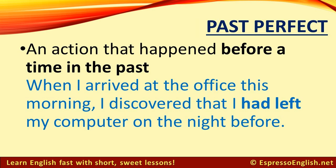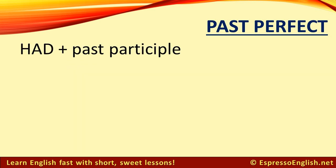Use the past perfect for an action that happened before a time in the past. For example: "When I arrived at the office this morning, I discovered that I had left my computer on the night before." We have several actions in the past. Arriving at the office happened in the past, in the morning, and leaving my computer on also happened in the past, before arriving at the office. The form of the past perfect is had plus the past participle.